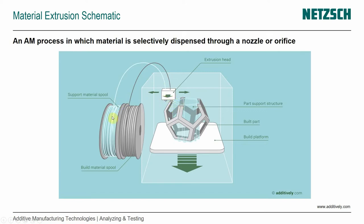And if we have a second spool, that's typically the support material — it can be the same material and so on. When we look at the general impact factors that we discussed a couple of episodes ago, I adjusted it slightly to represent the differences that we see in material extrusion.